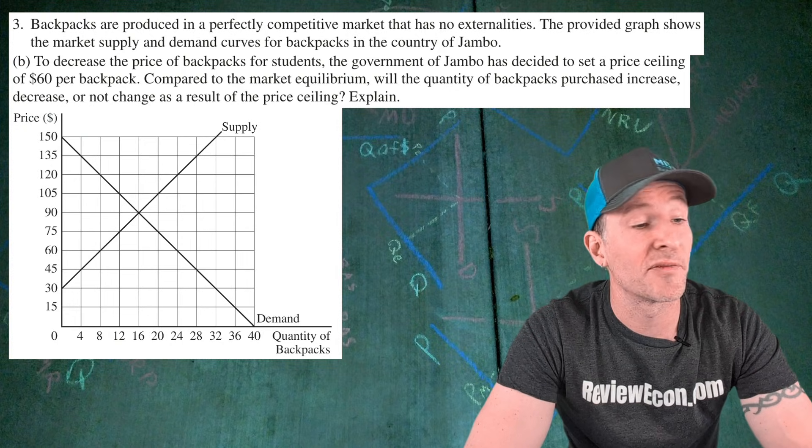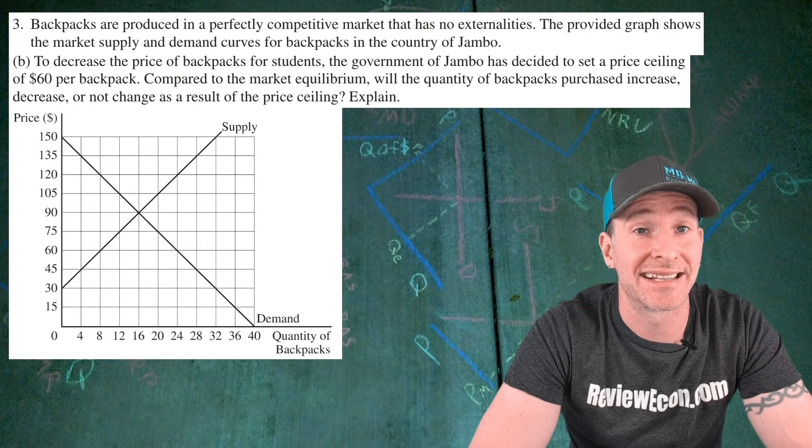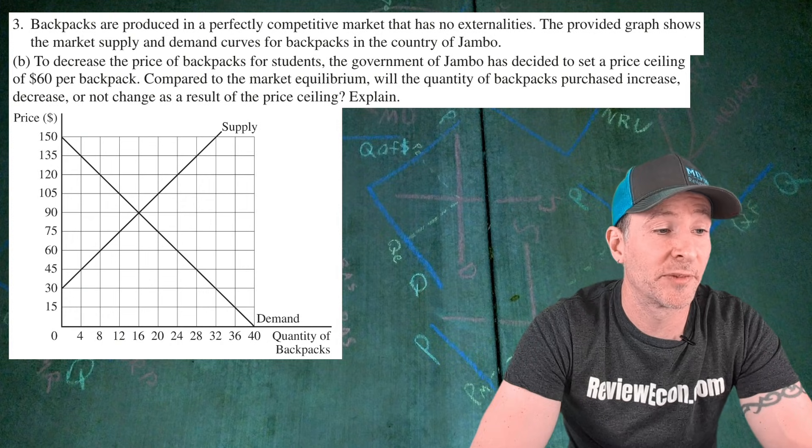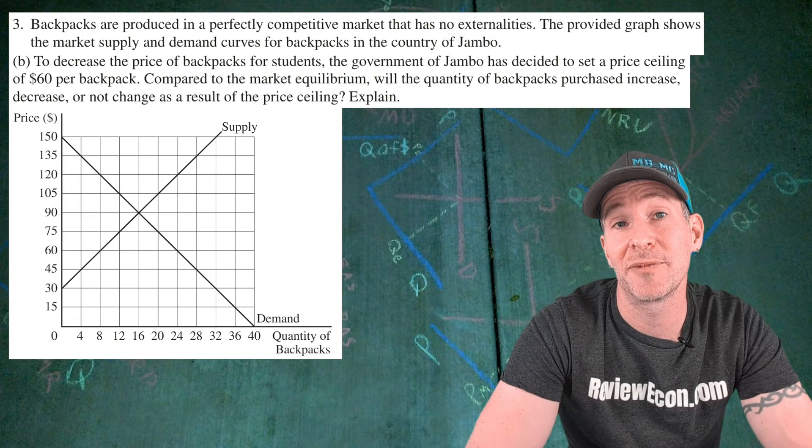For part D, we are told that the government puts a price ceiling on backpacks and that price ceiling is at $60. Compared to the market equilibrium, we are asked if the quantity of backpacks purchased will increase, decrease, or not change. And we have to explain.